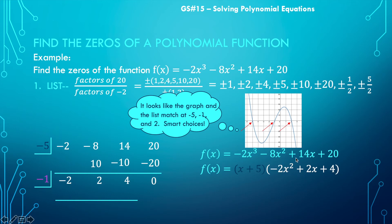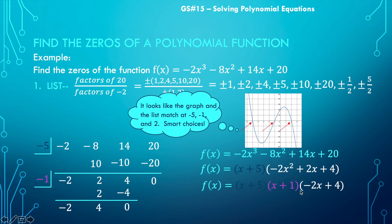Using synthetic division on the remaining quadratic piece with -1: bring down -2, multiply by -1 to get +2, add to get 4, multiply by -1 to get -4, giving a remainder of 0 — so negative 1 also works. I now have 3 linear factors total. Setting each equal to zero gives my 3 solutions.